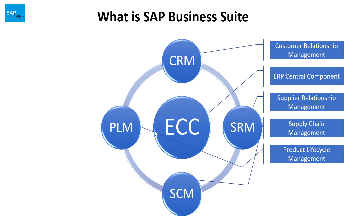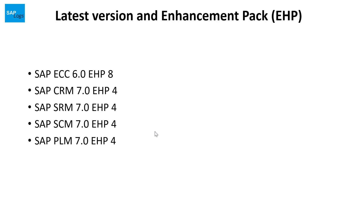I will talk about these applications in detail in the upcoming videos. These are the latest version and enhancement pack levels of these Business Suite applications. For SAP ECC, the latest version is SAP ECC 6.0, enhancement pack 8. And for CRM, SRM, SEM, and PLM, it's 7.0, enhancement pack 4.